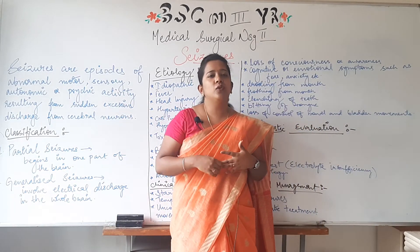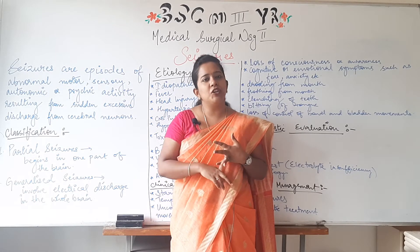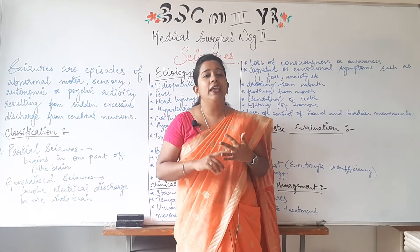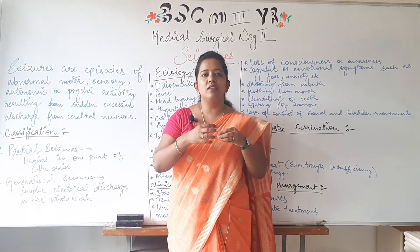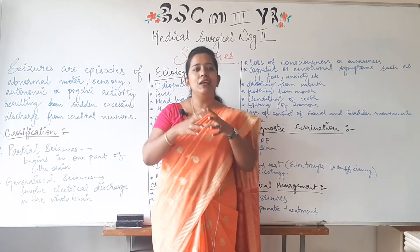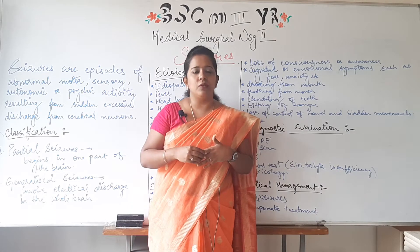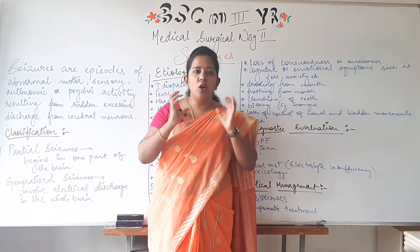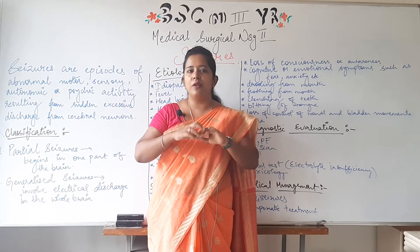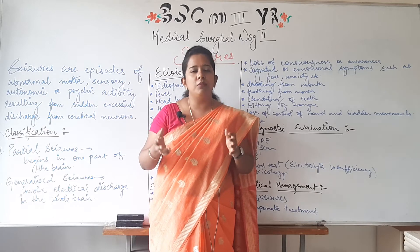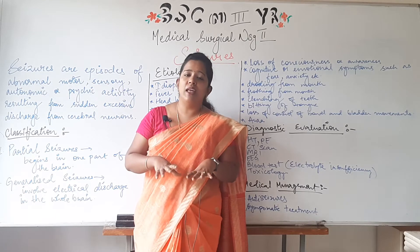If we want to classify seizures, there are two types: partial and generalized. In partial seizures, the neurotransmission abnormality starts in one part of the brain, and that leads to seizures. When the whole brain is involved in the abnormal transmission, that comes under generalized seizures.